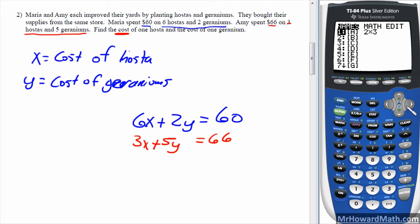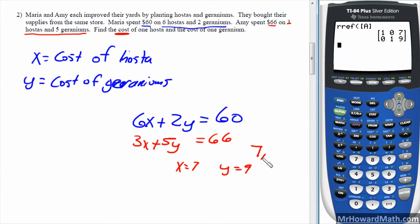Second matrix. Over to math. Alpha apps. Back into matrix one last time. Enter twice. So X is 7, and Y is 9. So 7, 9 is the ordered pair. So the cost of a hosta is $7. That's this part. And a geranium is $9. So $7 and $9 on that one.